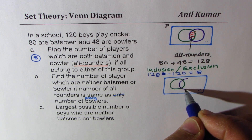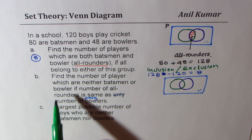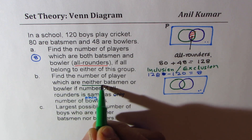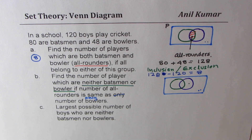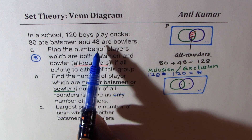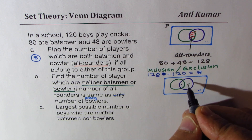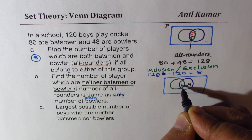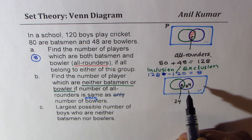We have the same group, but this time there is a condition: find the players who are neither batsmen nor ballers — outside both circles — given that the number of all-rounders equals the number of only ballers. We already have 80 batsmen and 48 ballers in all. Splitting the 48 ballers equally: 24 will be only-ballers and 24 will be all-rounders, since those two numbers must be the same.